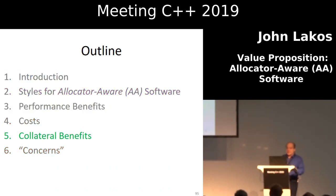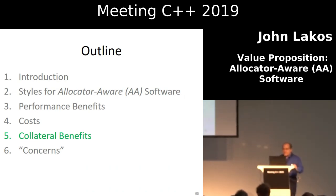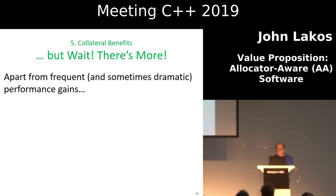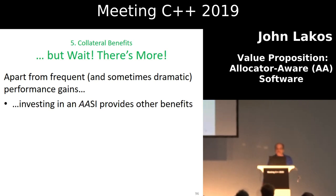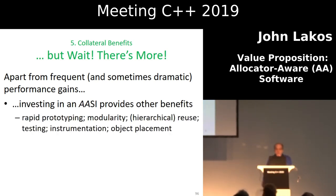The next thing to talk about is collateral benefits. We've already talked about performance. What else does having allocators do for you? Rapid prototyping, modularity, hierarchical reuse, testing, instrumentation, and object placement, to name a few.